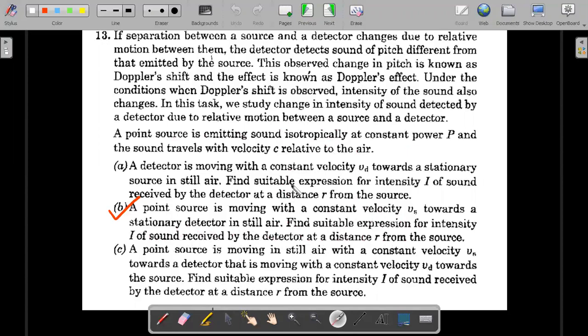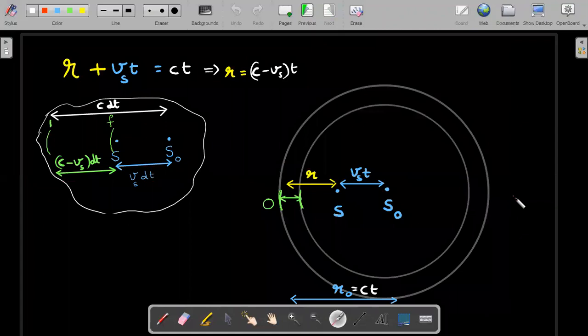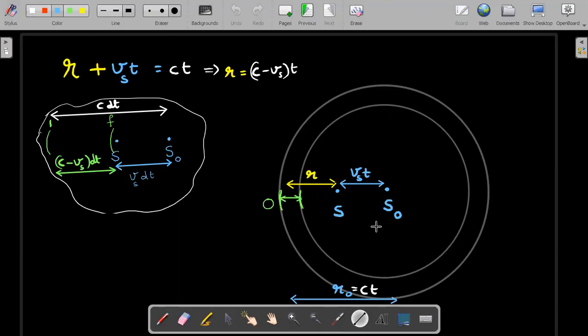We are here to investigate the intensity detected. I've already pre-drawn the situation. This time you can see that the source initial position I have marked as S naught. This is at T equal to zero, and by T equals T seconds, the source has moved towards left. I'm considering the source to be moving towards left. Let me mark that with an arrow here. This is the direction of motion of the source.